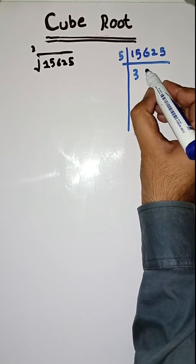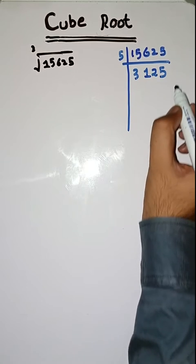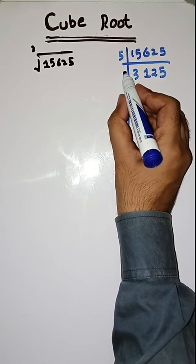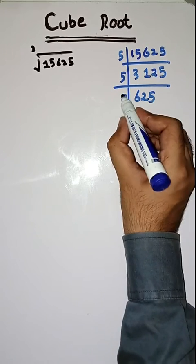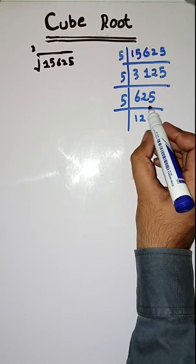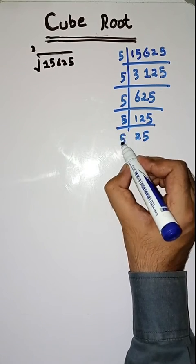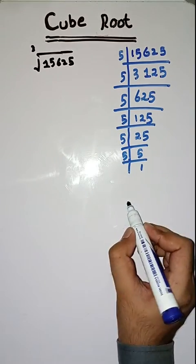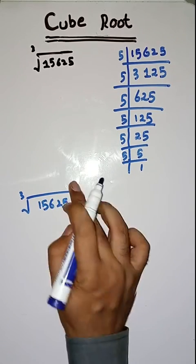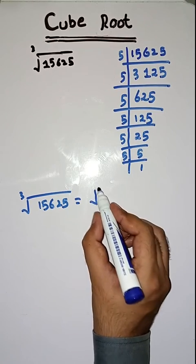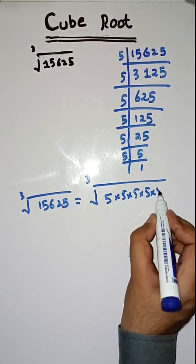Dividing by 5: 5 threes are 15, 5 fives are 25, 5 ones are 5. So students, the cube root of 15625 is equal to the cube root of its prime factors, which are 5 × 5 × 5 × 5 × 5 × 5.